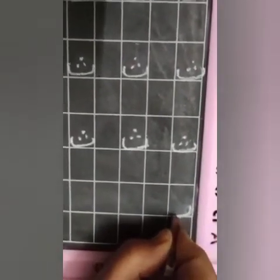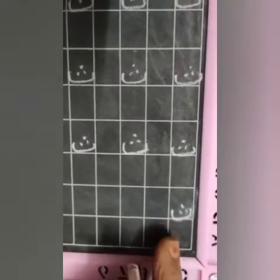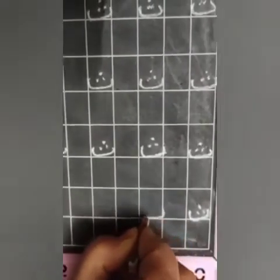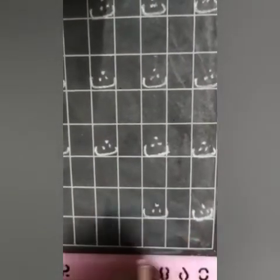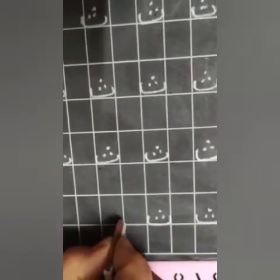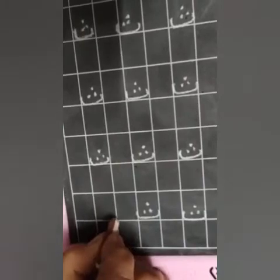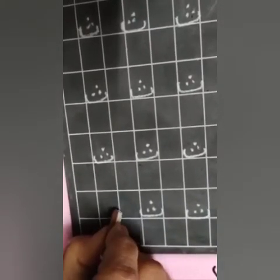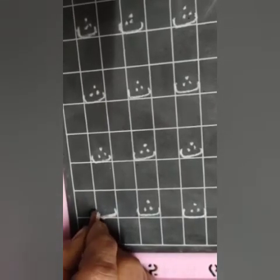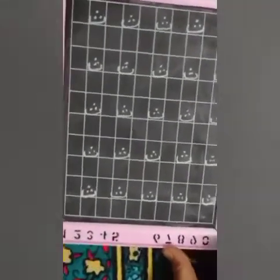Ek box ko chhoro, phir puri line chhoddo. Bolo kaise likhenge Sa — upar se niche ki taraf ko, sleeping line, phir niche se upar ke taraf ko, upar teen nukte — kya ban gaya? Phir ek box chhoro, phir likho beta Fa. Bolte jao, likhte jao.